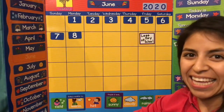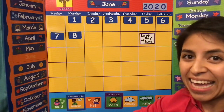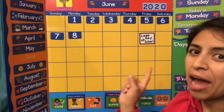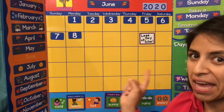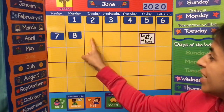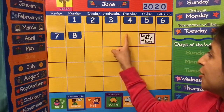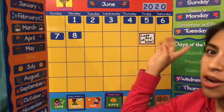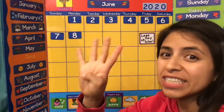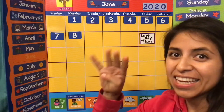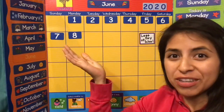Awesome work, TK. And let's not forget to count how many days we have left: 1, 2, 3, 4. 4 days left in TK, and then you're going to move on to Kinder. Let's make it count.